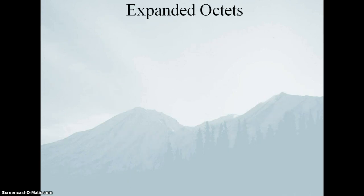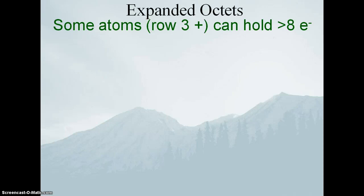What if we have too many electrons? Well, there are some atoms — and we'll talk about later why we can do this, but for now just trust me — there are some atoms in row three and higher that can hold greater than eight electrons. Row three, row four, row five: sulfur, chlorine, phosphorus, and elements in that row and below on the periodic table. Put another way, nitrogen, oxygen, fluorine, and carbon cannot — it is physically impossible for them to hold more than eight electrons. We'll talk about it later when we cover hybridization. For now, just accept that only row three and higher elements like sulfur, chlorine, and bromine can have an expanded octet.